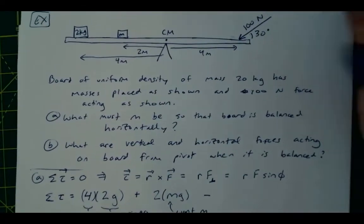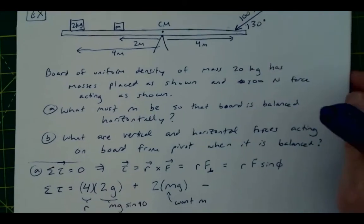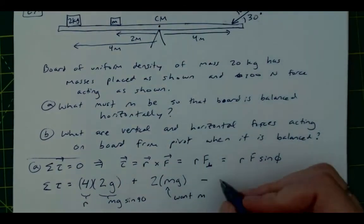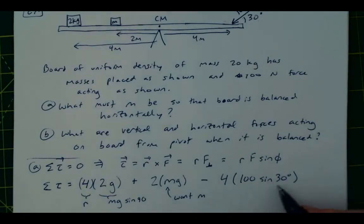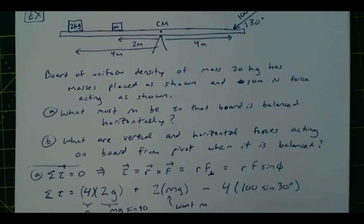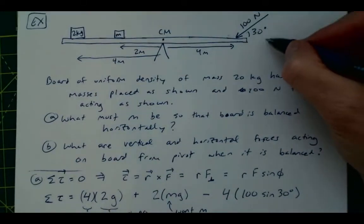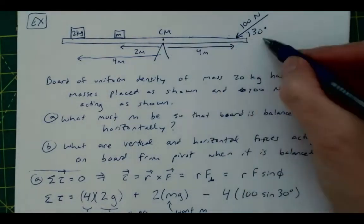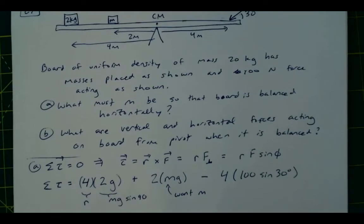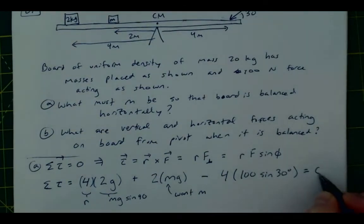And so for this one, remember it was 100 newtons, and so that's going to then be a distance of 4 away times 100 times the sine of 30 degrees. And again, the only reason I could use sine is because the angle they provided gives me the component that is indeed perpendicular to my lever arm.